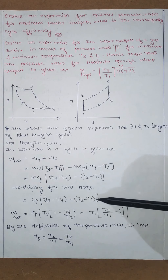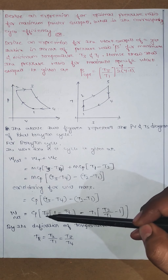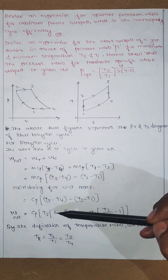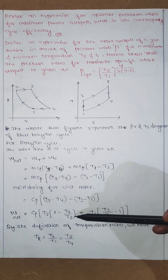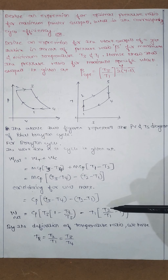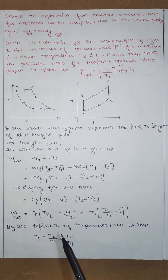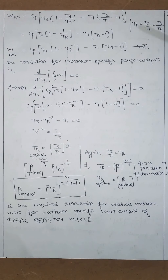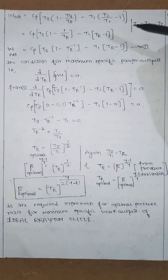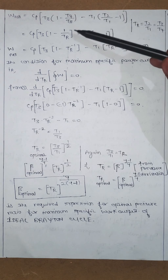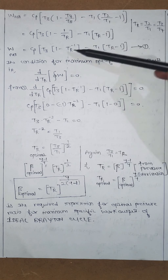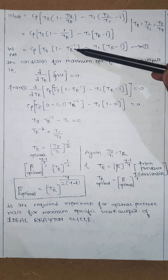Taking T3 as common from the turbine term gives (1 - T4/T3), and taking T1 as common from the compressor term gives (T2/T1 - 1). By definition, the temperature ratio TR equals T2/T1, which also equals T3/T4 as discussed in the previous derivation. Substituting: T4/T3 = 1/TR and T2/T1 = TR, so TR in the numerator becomes TR to the power of minus 1.